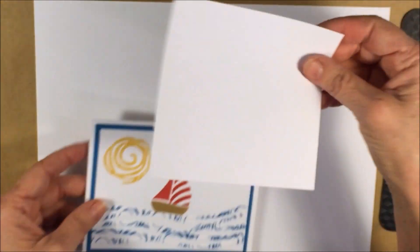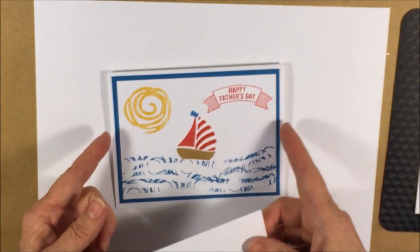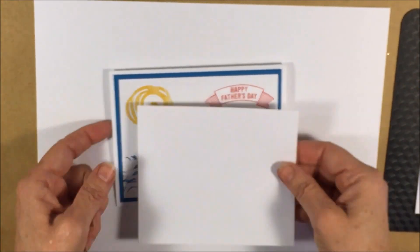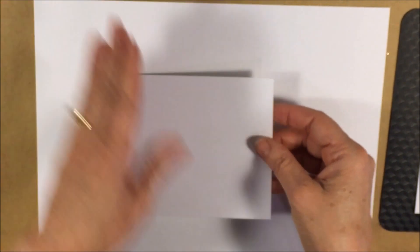The way I did it was I took a scrap piece of paper. You want your scrap piece of paper to be at least five inches wide. To make the waves I took the Swirly Bird stamp.